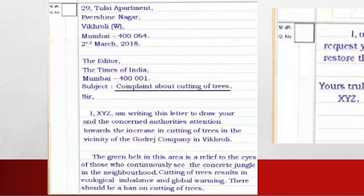Sir, I, XYZ, am writing this letter to draw your and the concerned authorities' attention towards the increase in cutting of trees in the vicinity of the Godrej Company in Vikhroli. The green belt in this area is a relief to the eyes of those who continuously see the concrete jungle in the neighborhood. Cutting of trees results in ecological imbalance and global warming; there should be a ban on cutting of trees.